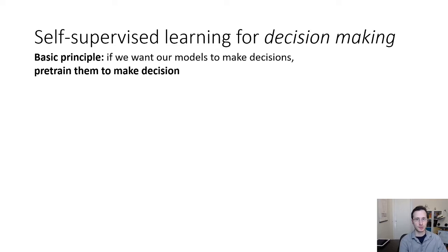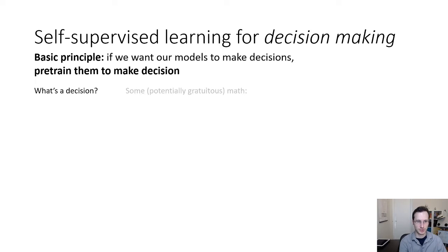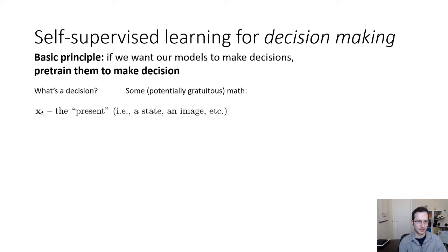So if we accept this perspective, how do we devise a self-supervised learning framework centered around making decisions? The basic principle I'm going to argue for is: if we want our models to make decisions, we should pre-train them to make decisions. What's a decision? We have some state x_t, the present — which could be a state in the RL sense, or an image. And we have x_{t+k}, the future — something that will take place sometime from now.